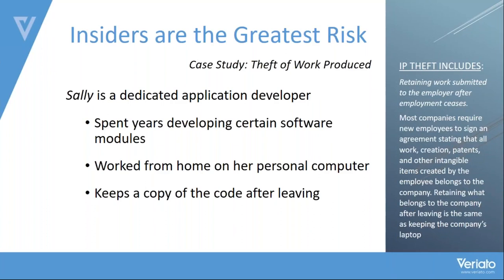Sections of source code were hidden within documents that on first glance appeared innocuous — personal documents related to his immigration, taxes, and personal images that belonged to him. The plan was to have the company return those personal documents to him when he left, allowing him to walk out the front door carrying his belongings — with the hidden source code inside. He was not successful, but if he had been, he would have stolen from the company.